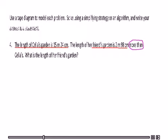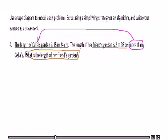More than Celia so I can just draw an arrow to Celia. And what is the length of the friend's garden? So that is also important. So I'll just circle the question because that's what we need to find out. So from here what I would do is make a tape diagram.